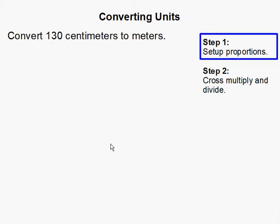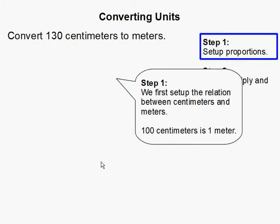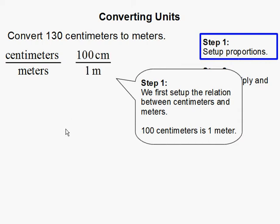Step 1: Set up proportions. So we first set up our relationship between centimeters and meters. And we know that there are 100 centimeters in 1 meter.